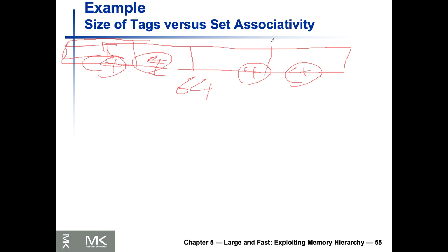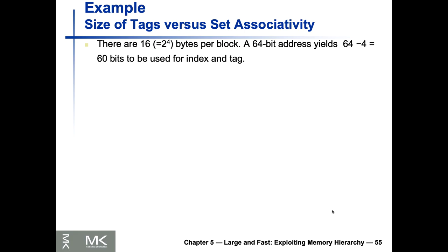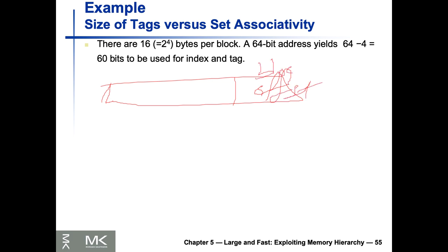Each block has four words. Each word is 32 bits, which is four bytes. So four words equals 16 bytes per block — that's two to the power of four. This means we need four bits out of the 64-bit address to represent the block offset.